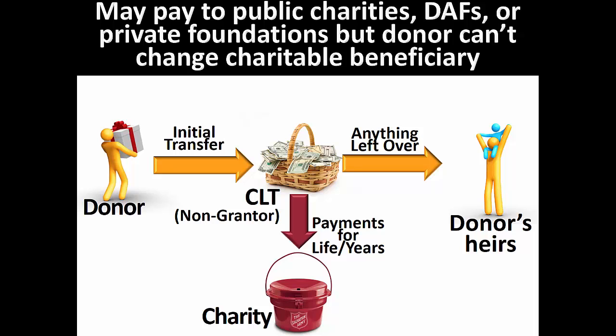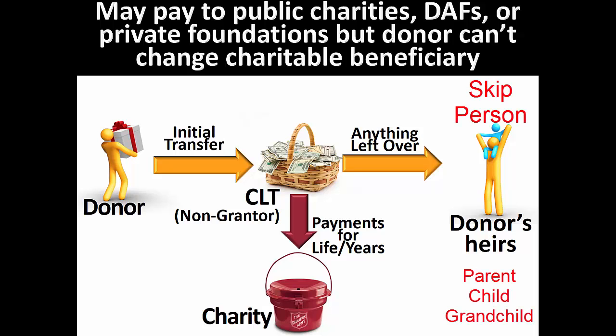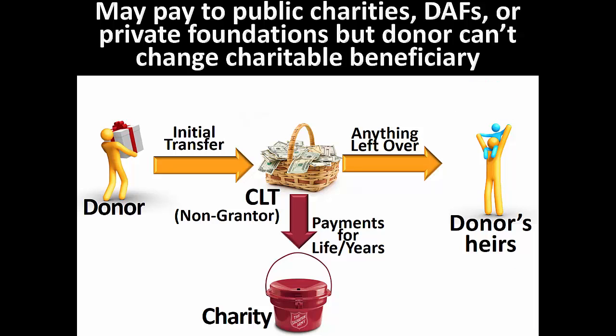Note, however, that if the charitable lead trust will pay to a "skip person," such as a grandchild with living parents, it is important that no one retains the right to change the charitable beneficiary. This is discussed briefly later in the section on generation-skipping transfer taxes. It is also acceptable if the donor has the power to "request, but not direct" an independent trustee to change the charitable beneficiary. Because the donor does not have the legal right to change the charitable beneficiary, keeping this right does not create estate tax problems.